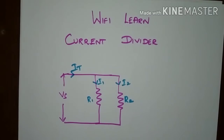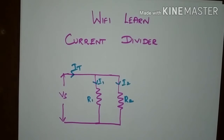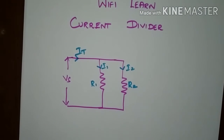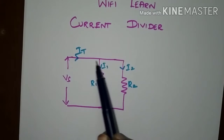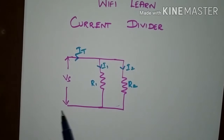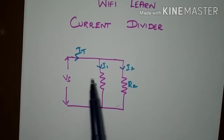A current divider circuit has two or more parallel branches for current to flow through, but the voltage is the same for all the components present in the parallel circuit. It is a parallel circuit with two resistances connected in parallel using a common point, where we are giving a supply voltage Vs — either from a battery or any energy source.